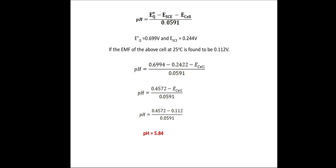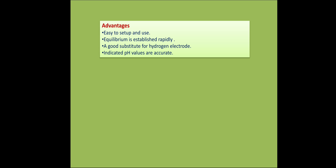This is how you determine the pH of a solution using the quinhydrone electrode. Coming to the advantages: it is very easy to set up and handle. The equilibrium is established very rapidly, and this electrode is a very good substitute for the hydrogen electrode in cases where the hydrogen electrode cannot be used. The values of pH obtained are found to be more accurate.